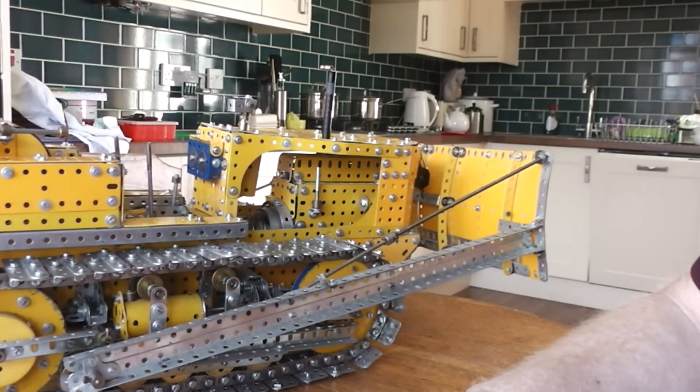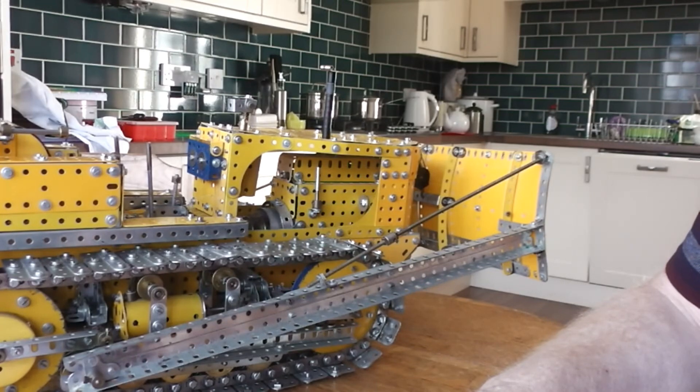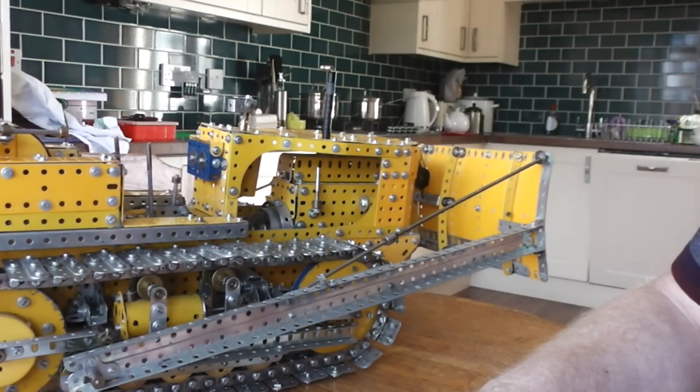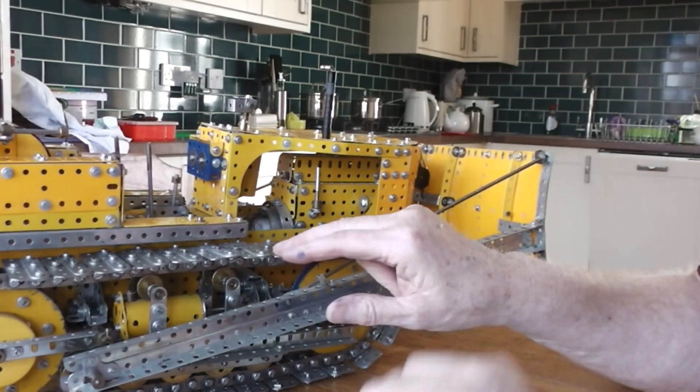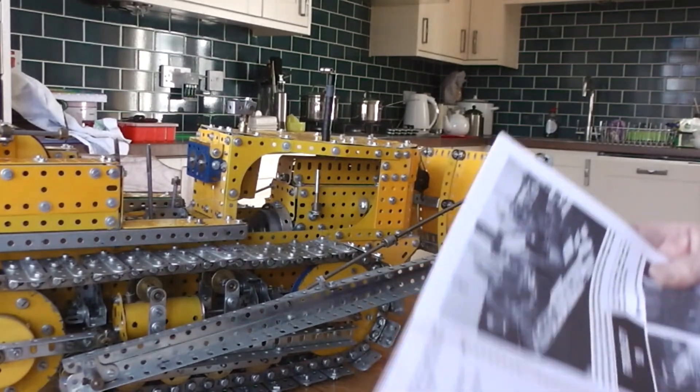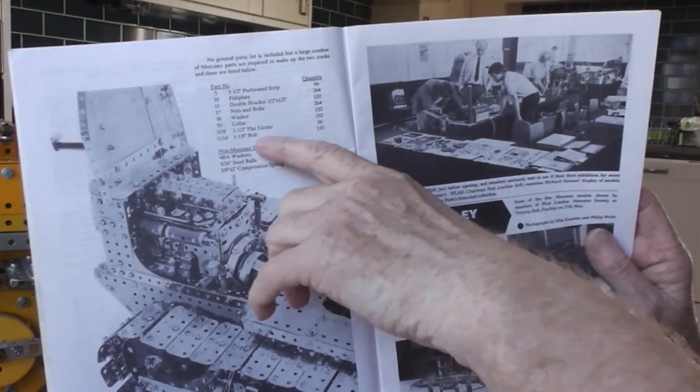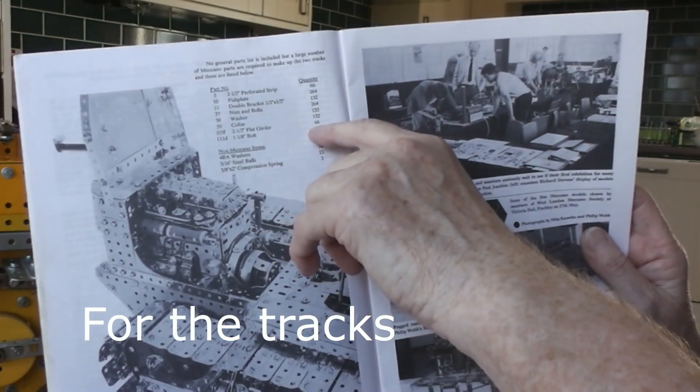In terms of parts, a couple of people have asked in the comments. I guess one of the most difficult things to get enough parts for are the part 103. You do in fact need 66 of these 2.5 inch flat girders to complete the model.